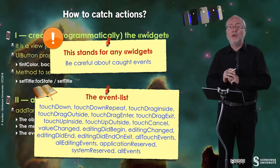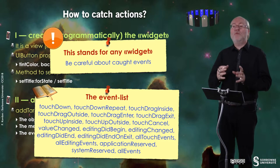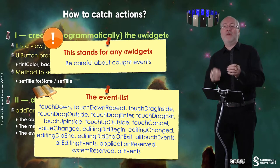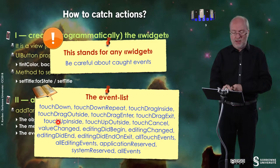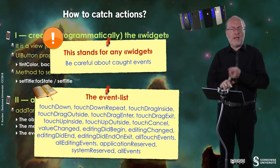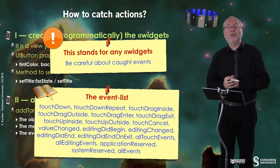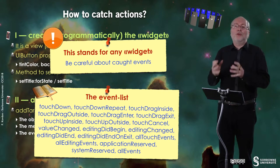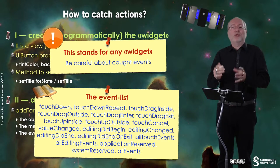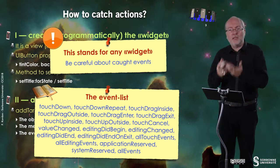You have to be careful because you have a very large list of events. And of course, some widgets support some events and other widgets support other events. For example, you have value change: value change stands for switches, for sliders, and also for UISegmentedControl — but not for buttons. On the contrary, touchdown stands for buttons. So you just have, once again, to go through the documentation to know, for a given widget, what is the event list it's reasonable to catch.